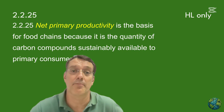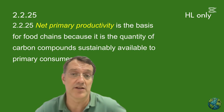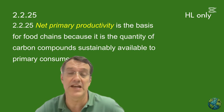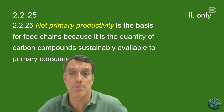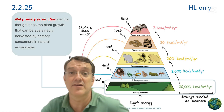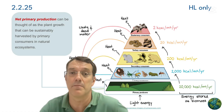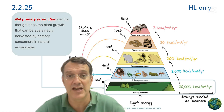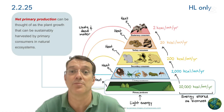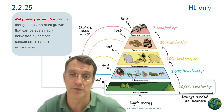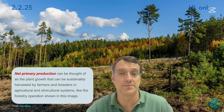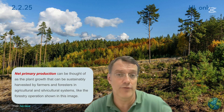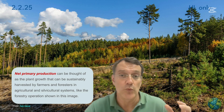Net primary productivity forms the foundation of food chains because it represents the quantity of carbon compounds sustainably available to primary consumers. This idea is really important because it helps us understand the ethical implications of food production.